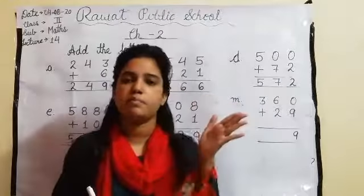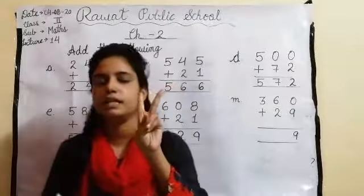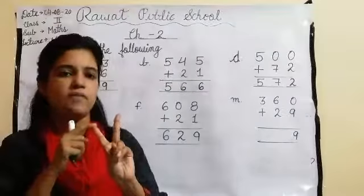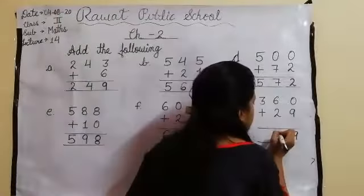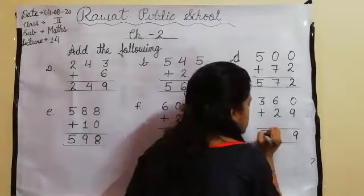Next, dimaagh mein yaad rakhein number 2. 2 fingers hum ne 6 ke baad count karenge. 7 and 8. Number 8 and then 3 ka 3 as it is.